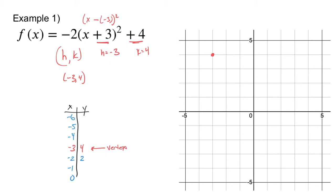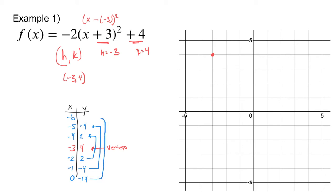I'll repeat this for negative 1: negative 1 plus 3 is 2, 2 squared is 4, times negative 2 is negative 8, plus 4 gives me negative 4. And for 0: 0 plus 3 is 3, squared is 9, times negative 2 is negative 18, plus 4 gives me negative 14. Then by symmetry, negative 4 comma 2 matches negative 2 comma 2; negative 5 comma negative 4 matches negative 1; and negative 6 comma negative 14 matches 0.